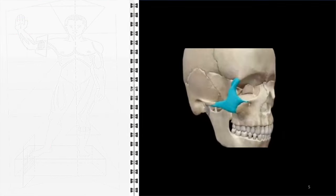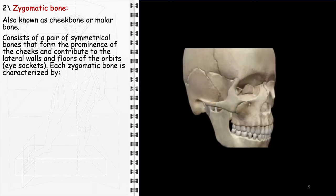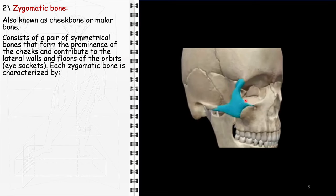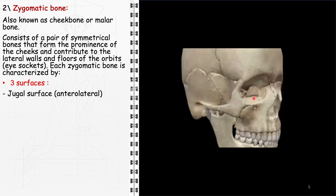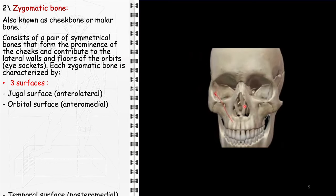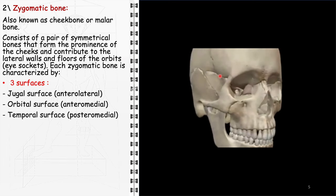The zygomatic bone, widely recognized as the cheekbone or malar bone, comprises a pair of symmetrical bones. It forms not only the conspicuous prominence of the cheeks, but also significantly contributes to the lateral walls and floors of the orbits, thus providing structural integrity and protection to the eye sockets. Each zygomatic bone is distinguished by three specialized surfaces: the jugal surface, anterolateral in position, presents outwardly, forming the visible part of the cheek; the orbital surface, anteromedial in orientation, is part of the orbital floor and lateral wall, positioned towards the inner side of the orbit; and the temporal surface, posteromedial in location, contributes to the formation of the temporal fossa.